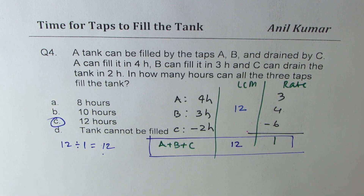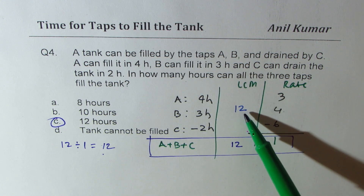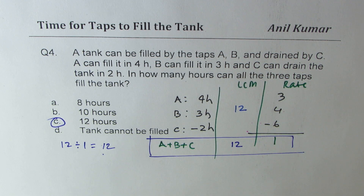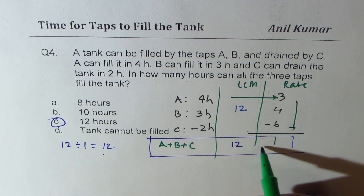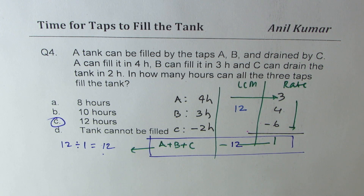Once you learn this technique, you can solve any work-done question — even mowing a lawn. The LCM is used for convenience to avoid fractions, but any common multiple works. Once you get the rate, the answer follows simply. Using this method, any multiple choice question based on work done can be solved in less than a minute. Please like, subscribe, and share with your friends. Thanks for watching and all the best!